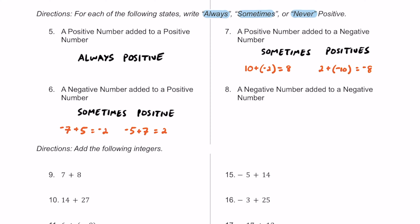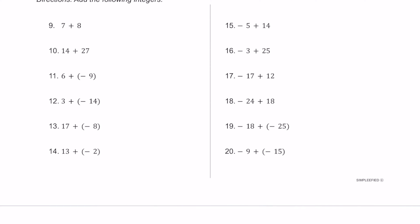For number 8, a negative number added to a negative number is never positive. If you add two negatives, you just get more negative. For example, negative 3 plus negative 5 equals negative 8 — you're below 0 and become even more below 0. Contrast this with a positive plus a positive, which always stays above 0.